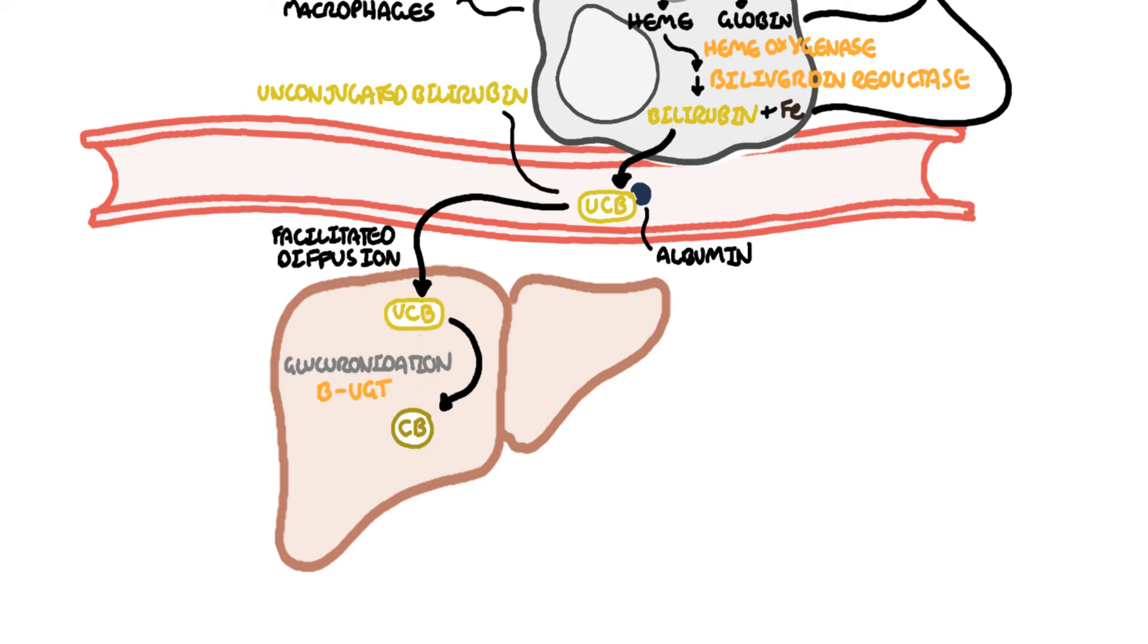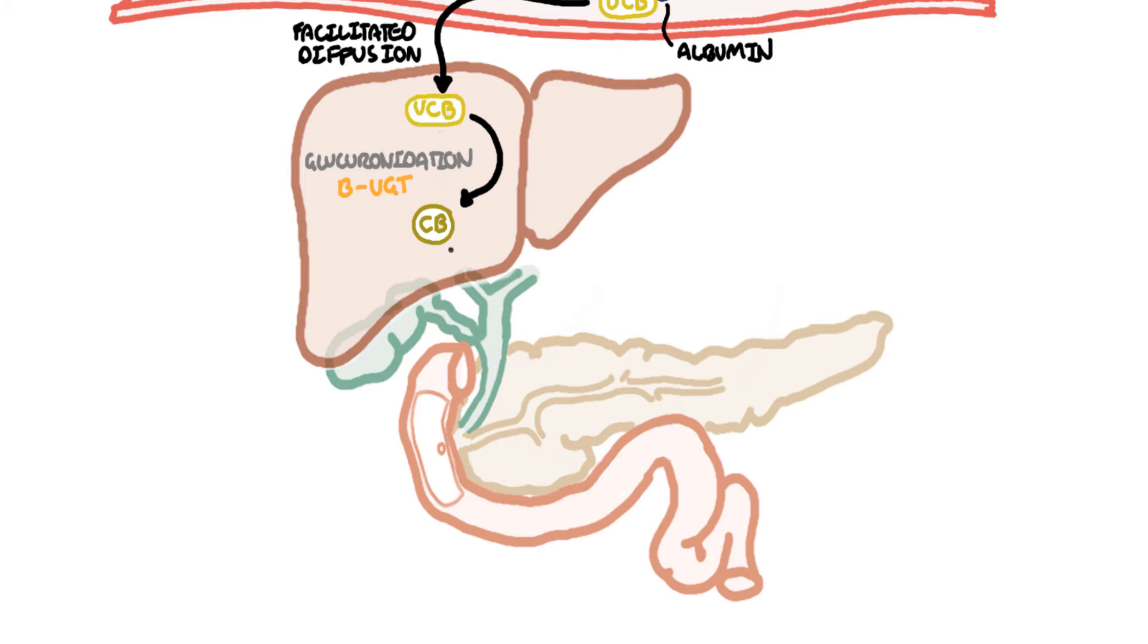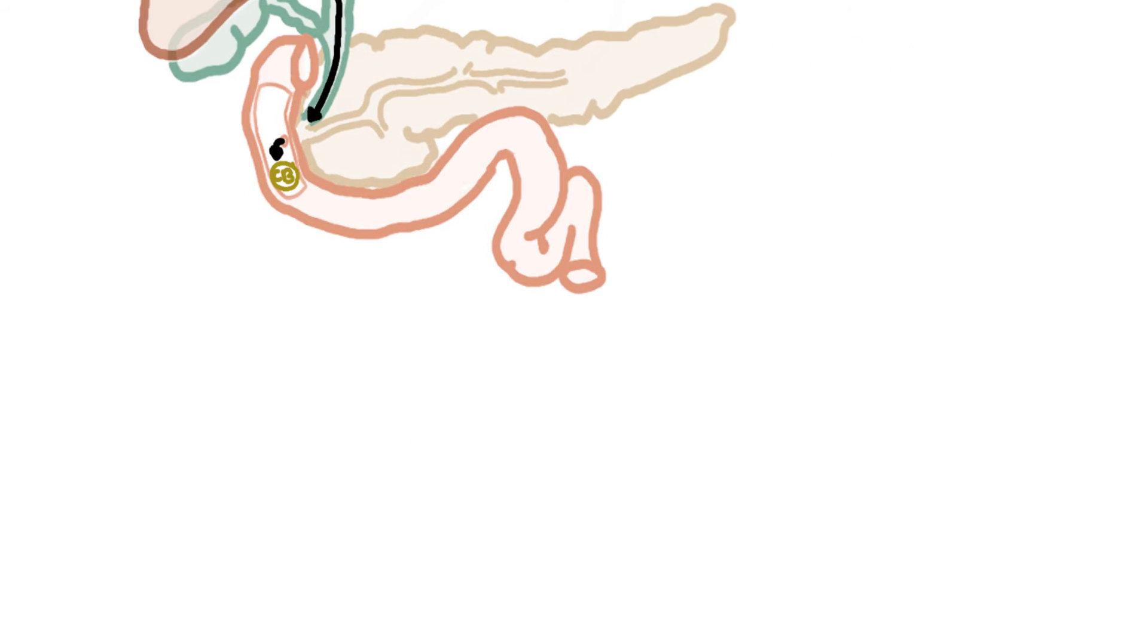Conjugated bilirubin travels down the bile duct where it joins with the pancreatic duct and into the duodenum through the ampulla of Vater. The conjugated bilirubin is now in the small intestine where it continues its journey.